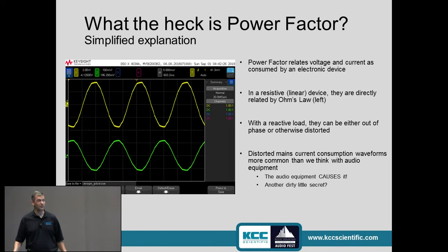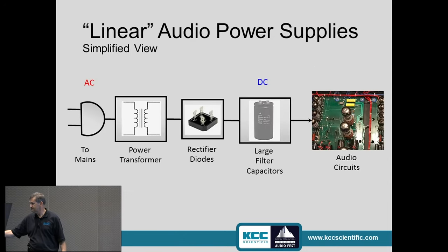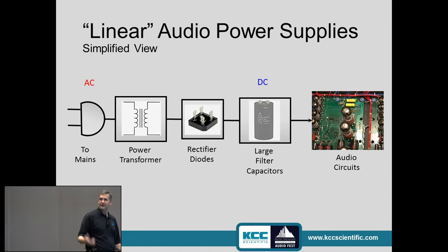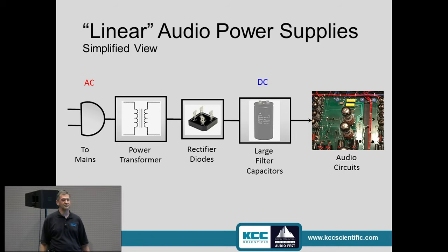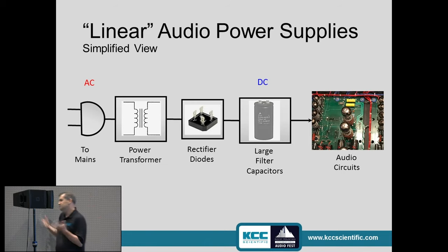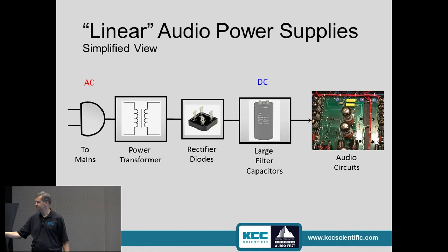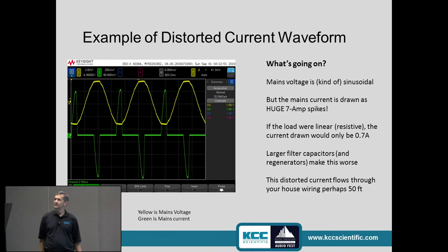The problem is that when you start to load with reactive things — things that have some impedance — and when you run them through power supplies that have rectifiers, the whole thing changes. Unfortunately, most of the audio equipment in this building has those linear power supplies built in. A linear power supply is typically built up with AC coming in, a power transformer, rectifier diodes, and a large filter capacitor — and off the signal goes to your tube circuit.